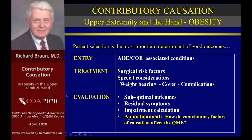On entry, we have to assess the AOE-COE evaluation. If they pass the threshold, they enter the treatment phase. When they enter treatment, we have surgical risks and perioperative risks to consider, plus special considerations such as upper extremity weight bearing, appropriate cover, and complications always associated with extremely obese patients.